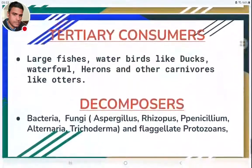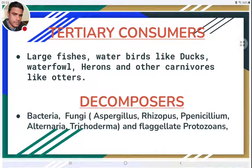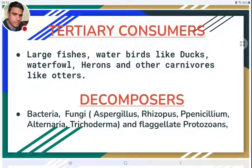Tertiary consumers include large fishes and water birds like ducks, waterfowls, and herons, as well as carnivores like otters — which are mammals that live in water bodies. Some terrestrial animals also occasionally visit water bodies for hunting or predation and may function as tertiary consumers.